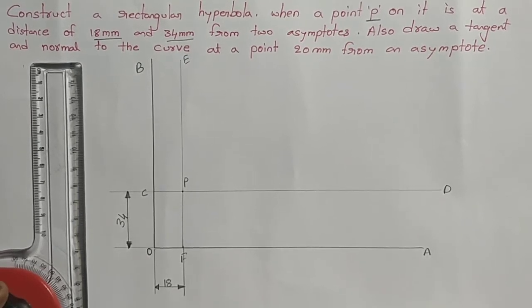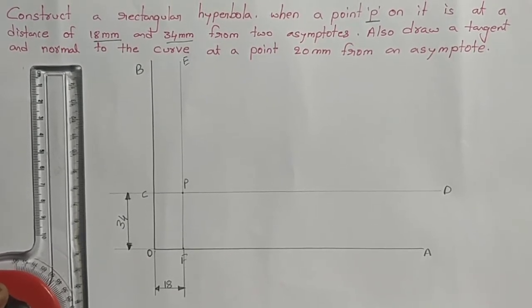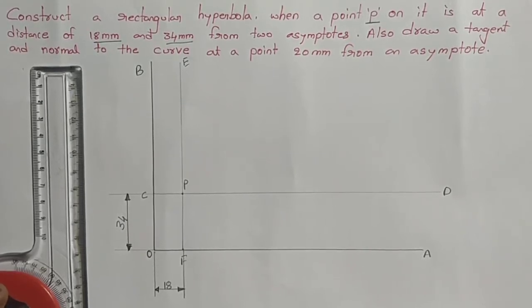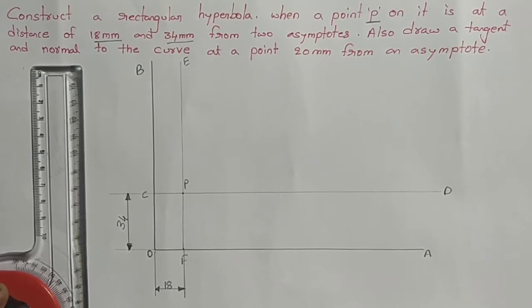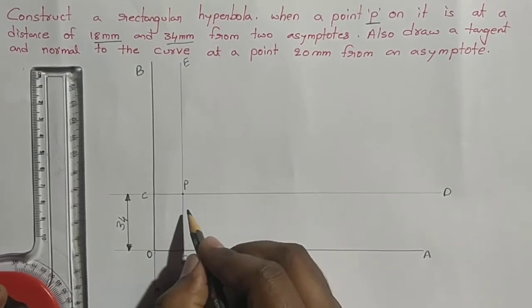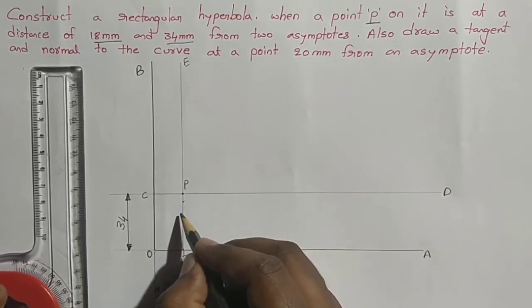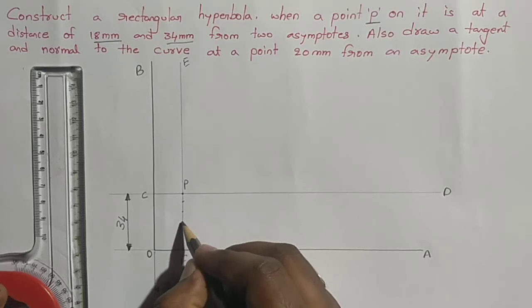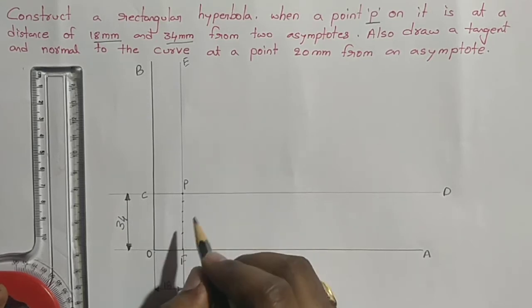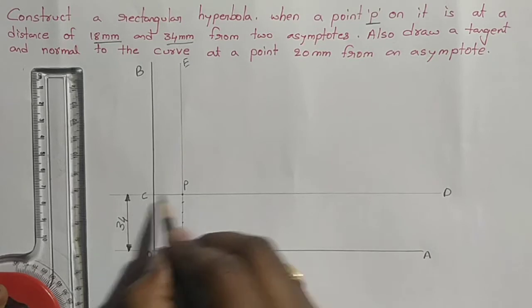After locating point P, we need to locate some points below point P on line EF. Mark unequal points: one, two, three, four. Similarly on the left side of P on CD, I'm taking two points.